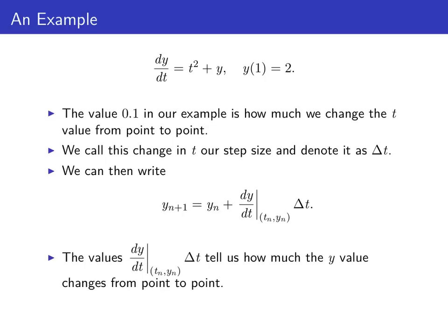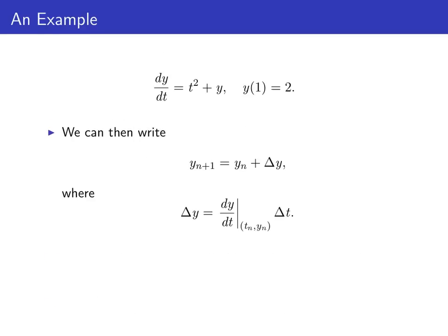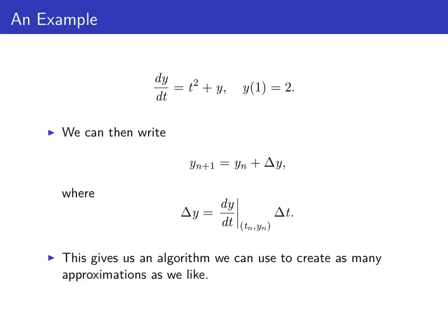The values dy/dt at (tₙ, yₙ) times Δt — the slope times the change in t — tell us how much the y value changes from point to point. We can label this as Δy. Putting this all together, we get the Euler's method formula: yₙ₊₁ = yₙ + Δy, where Δy is the slope dy/dt at (tₙ, yₙ) times Δt. This is an iterative algorithm that we can apply over and over again to make as many approximations to our solution as we like.